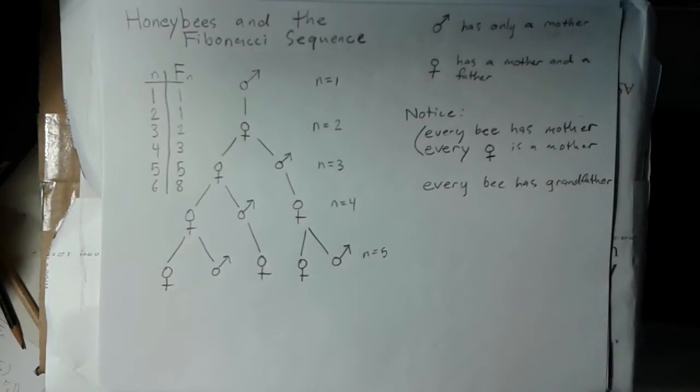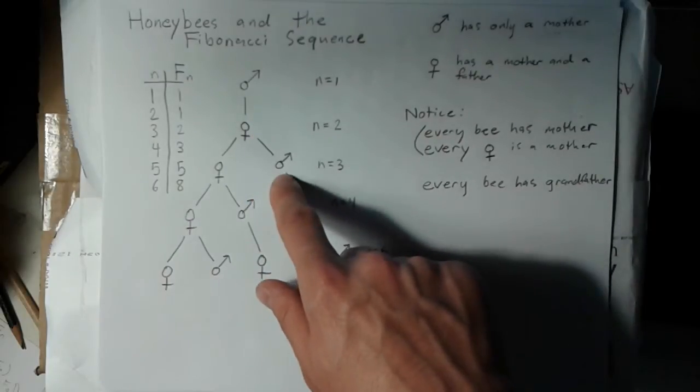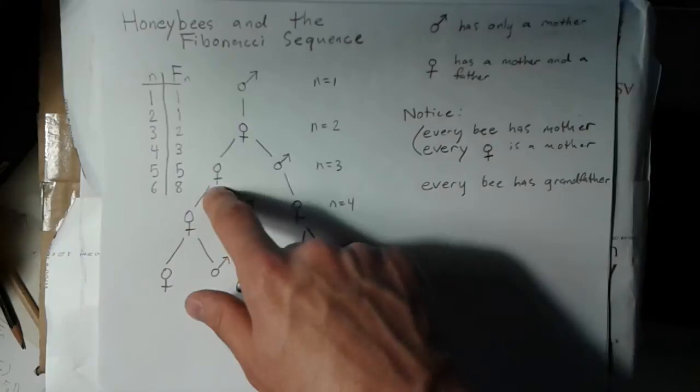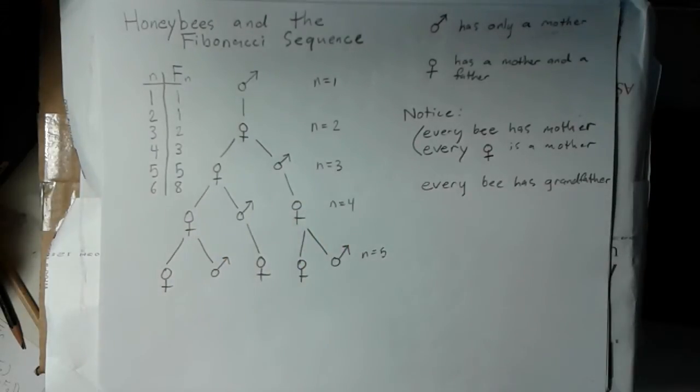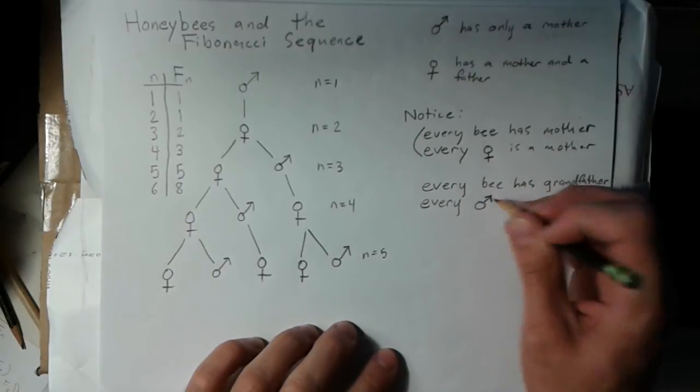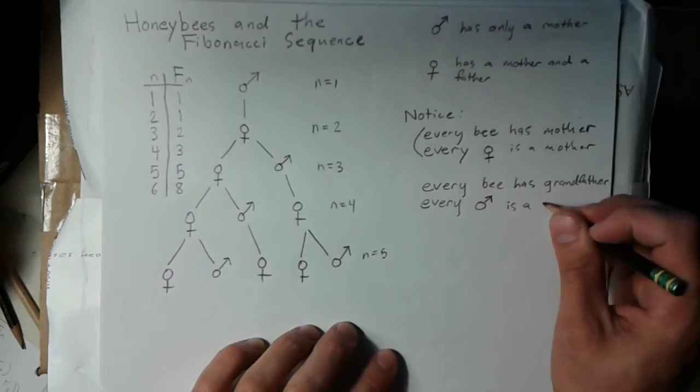We know that any drone and any queen, we're assuming, have the same sort of lineage. If you look at a given drone here, he has one grandfather, same with a queen. The other piece of information is that every drone on this chart except the first one is a grandfather.